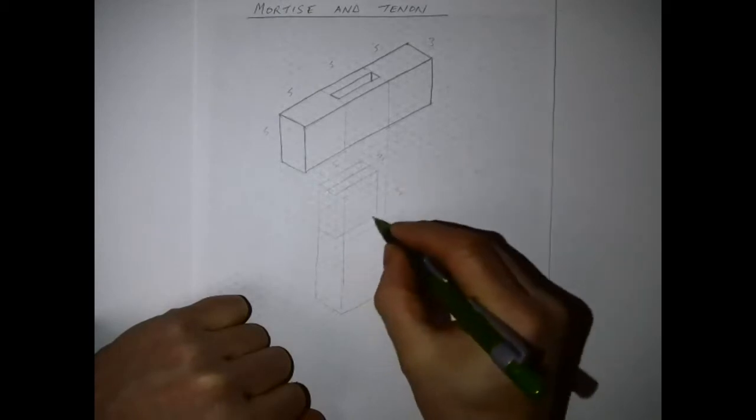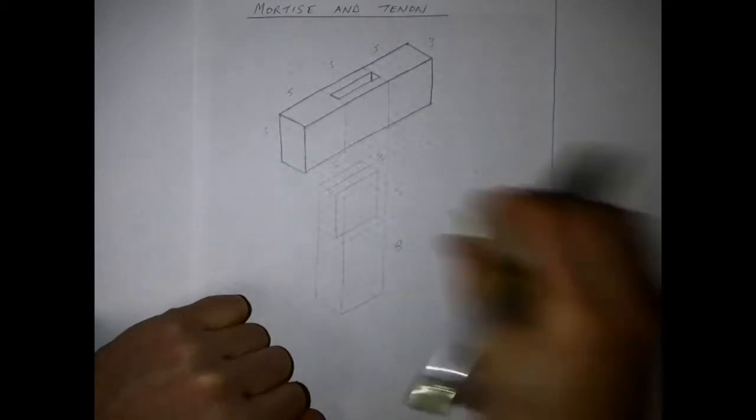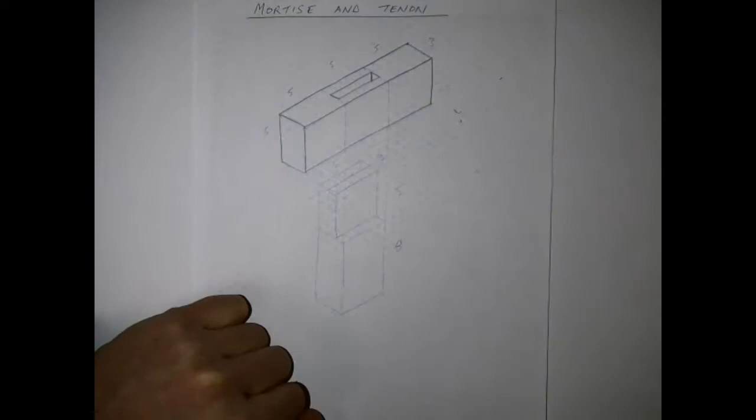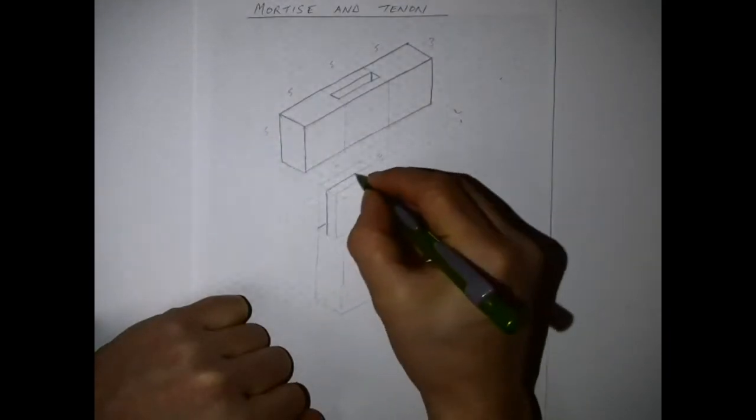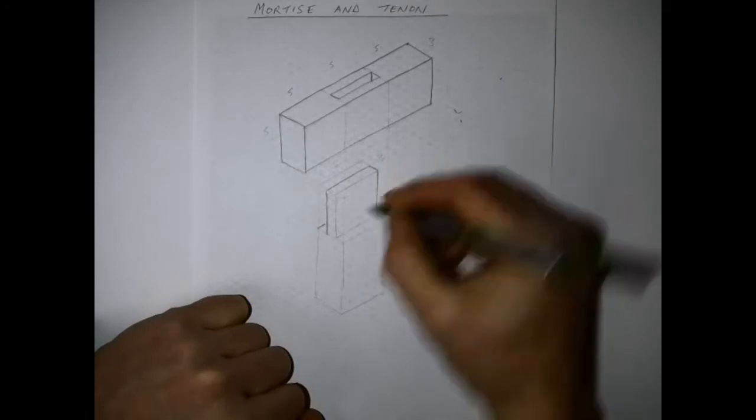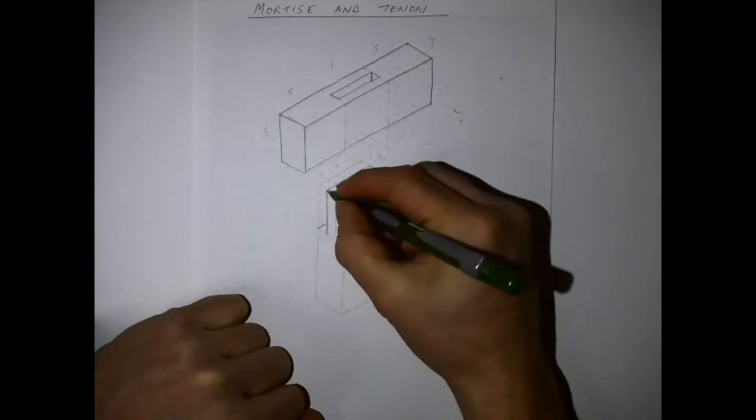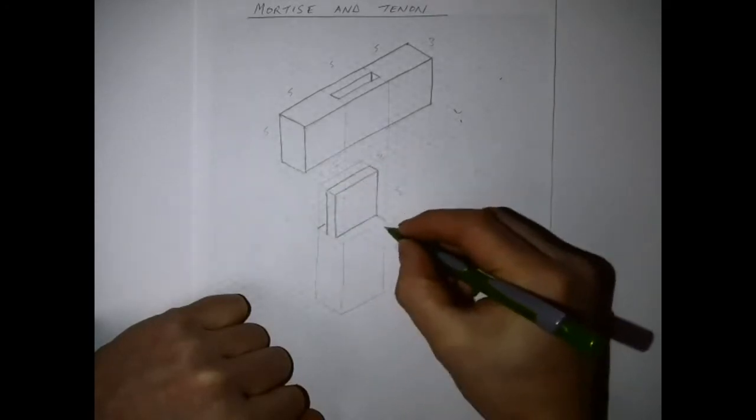Then at the bottom piece which is the tenon I take the three lines in the middle and I'm going to draw in the section I need. You can see I've rubbed out the facing lines just so that it doesn't take from the overall look of the tenon. And that is all within the five squares at the top.